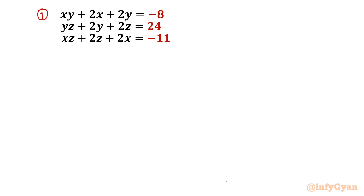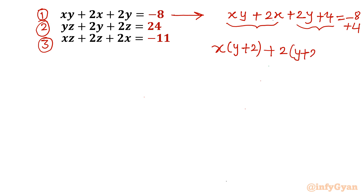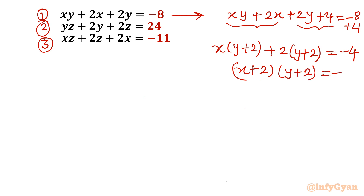I will begin by labeling these as equation numbers 1, 2 and 3. Now I will consider equation number 1: xy plus 2x plus 2y. I will add 4 to both sides, so plus 4 on the left and minus 8 plus 4 on the right. From the first two terms x is common, giving x times (y plus 2), and from the last two terms 2 is common, giving 2(y plus 2), equal to negative 4. Now y plus 2 is common, so we get (x plus 2)(y plus 2) equal to negative 4. This is equation number 4.